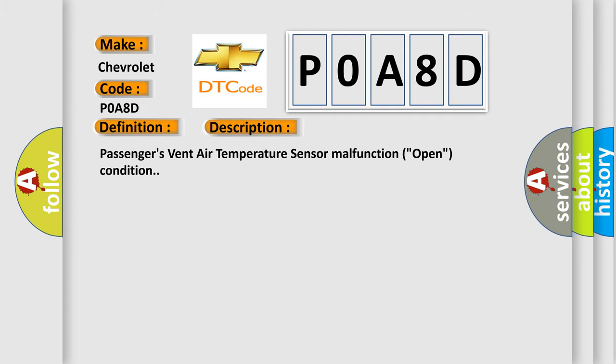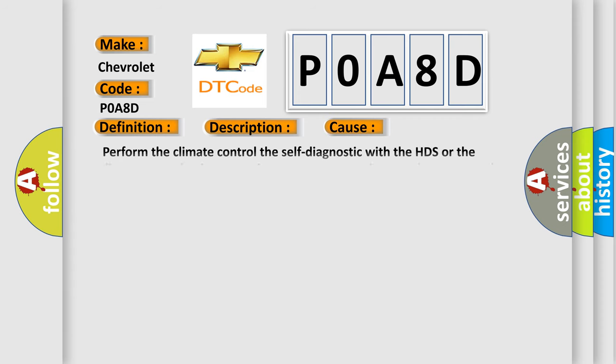Passenger's vent air temperature sensor malfunction, open condition. This diagnostic error occurs most often in these cases: Perform the climate control self-diagnostic with the HDS or the climate control unit. Loose wires or poor connections on the passenger's vent air temperature sensor circuit. Open circuit between the climate control unit and the passenger's vent air temperature sensor. Faulty passenger's vent air temperature sensor.